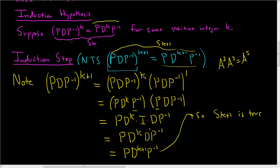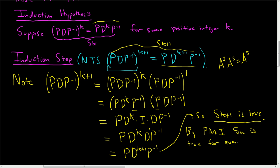In the induction hypothesis we assumed S_k is true, and in the induction step we proved S_(k+1) is true. That completes the proof. By the principle of mathematical induction, our statement S_n is true for every positive integer n.